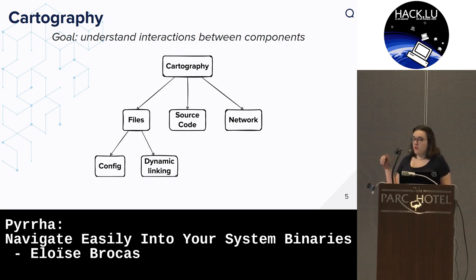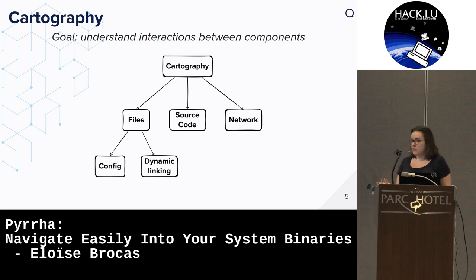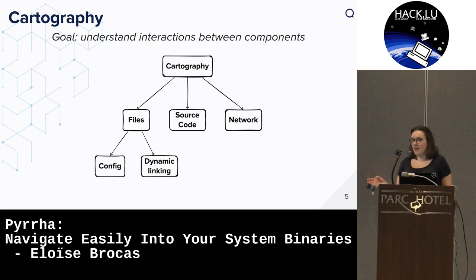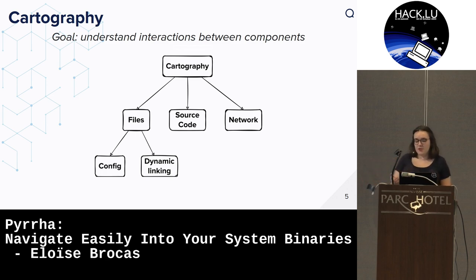You can do cartography for networks, for source code, for files - which is kind of obvious. You can check configuration files, but you can also check executable files and dynamic linking - how they interact together. I'm a reverse engineer, so I love executable files and I love digging into them, but I want to know which one I need to focus on. So we decided to go with dynamic linking for the cartography.